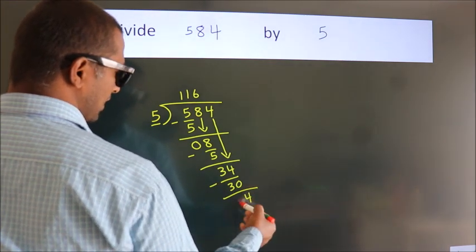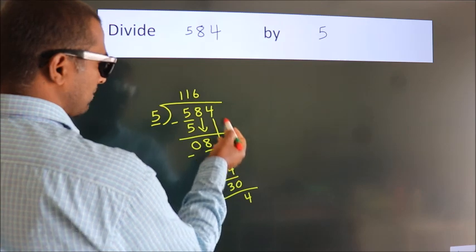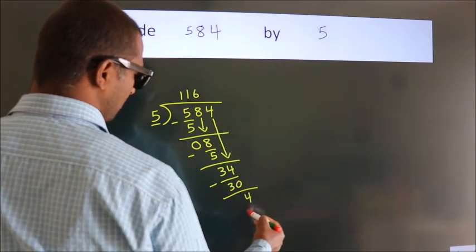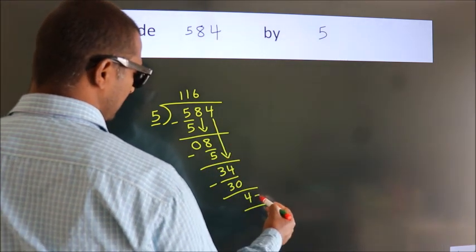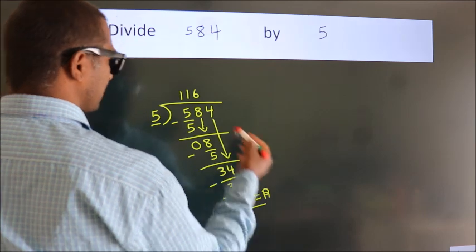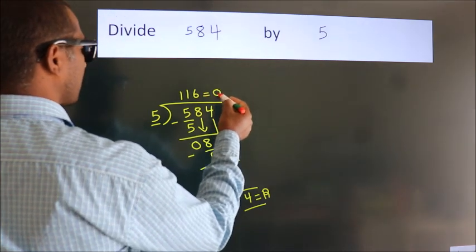After this, there are no more numbers to bring down, so we stop here. This is our remainder. This is our quotient.